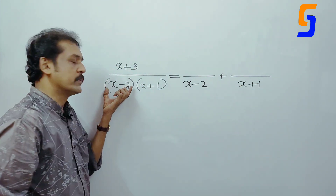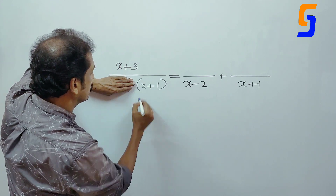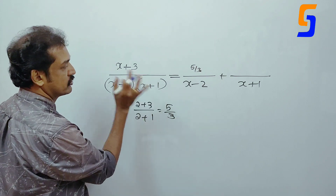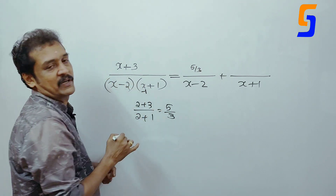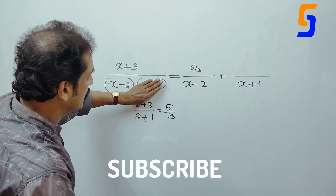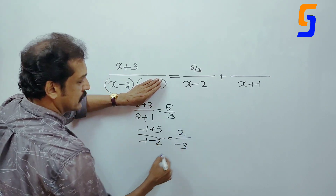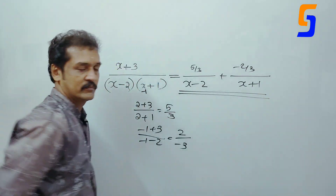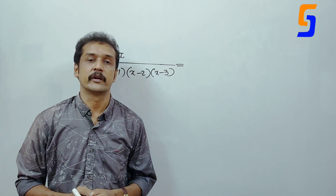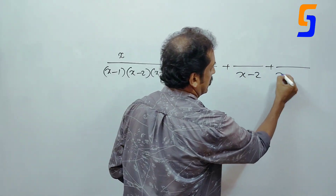First bracket: x minus 2 is 0, so x is 2. Then x minus 1 is 0, so x is 1. The answer is minus 1 plus 3 by minus 1 minus 2. That is 2 divided by minus 3. Answer is minus 2 by 3. That is the answer: x minus 1, x minus 2, and x minus 3.